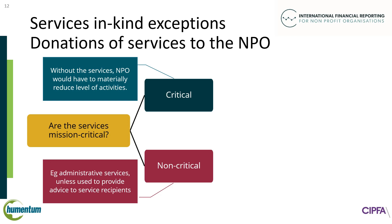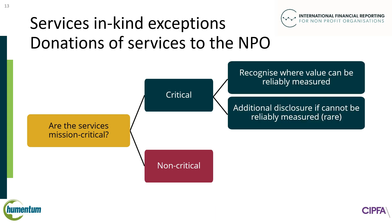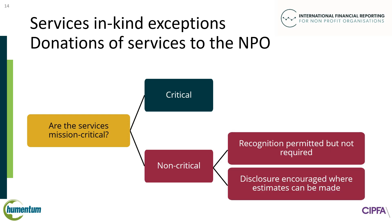Administrative services such as accountancy or legal are deemed to be non-critical, unless they directly support service recipients. NPOs should recognize mission critical services, provided the value can be reliably measured. Income and expense are recognized at the same time, to reflect the value of the service that has been received and that it has been used or expended straight away. In rare cases where income can't be recognized, INPAG requires additional disclosures. For non-critical services, recognition is permitted but not required. Disclosure is encouraged, particularly if estimates of the value can be made. Information about services in kind will be useful to financial statement users and improve transparency about the NPO's operations.